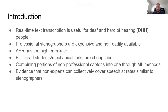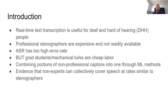Real-time text transcription is useful for deaf and hard-of-hearing people — in classroom or lecture settings, and even casual conversation. Professional stenographers are expensive and not readily available. Automatic Speech Recognition (ASR) has too high an error rate to be useful in real time. However, graduate students or Mechanical Turk workers are cheap, available labor. You can combine portions from multiple non-professional captionists into a single output through machine learning. This paper shows evidence that non-experts can collectively caption speech in real time at rates similar to stenographers, including for technical details.